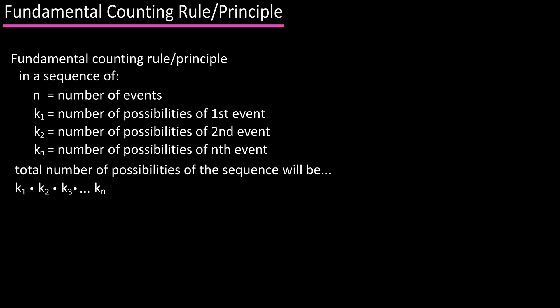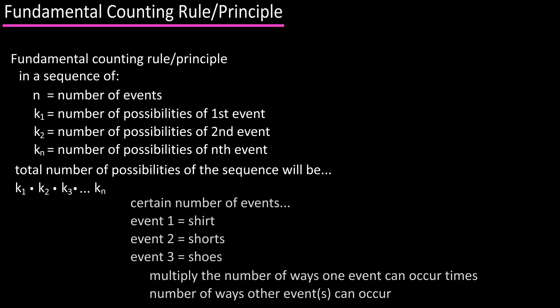What this is saying in simpler terms is that when you have a certain number of events, like in our example: shirts, shorts, and shoes, to find the total amount of possibilities of the sequence, you multiply the number of ways one event can occur times the number of ways the other events can occur.